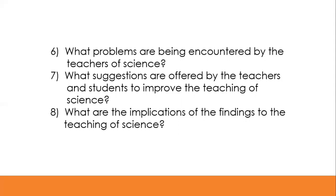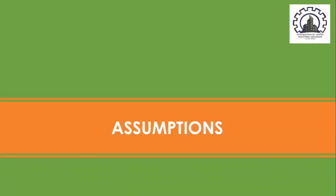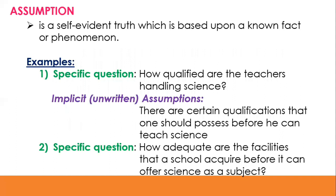This ends our discussion of the statement of the problem. Remember, there are two types: the general statement of the problem and the specific statement of the problem. The sub-problems should be in interrogative form. The next key area is assumptions. An assumption is a self-evident truth based upon a known fact or phenomenon. In descriptive and historical researches, assumptions are often not explicitly expressed but left implicit — meaning they are unwritten. Generally, every specific question is implicitly based upon an assumption. If there is no assumption expressed or implicit, there can be no specific question.